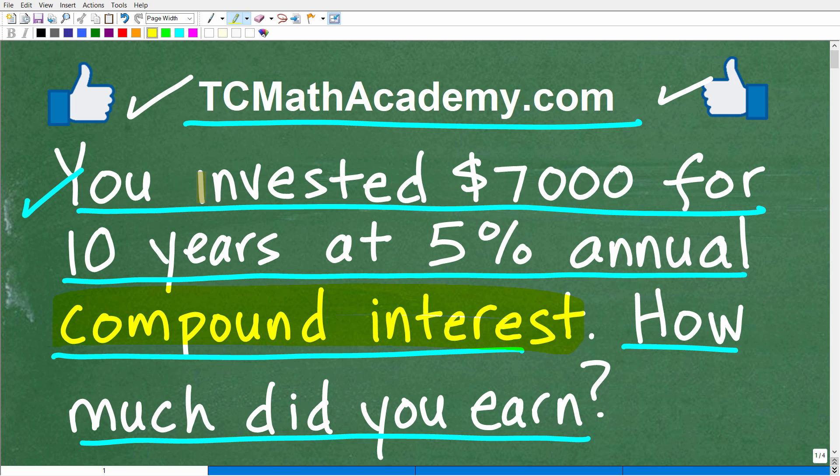All right. So just one more time. You go to your local bank or financial institution and say, hey, I have $7,000. You already made that money from your job or maybe someone gave this to you as a gift. But you have the $7,000 and you want to invest it for 10 years at a rate of 5% annual compound interest. So the question is what? How much money did we earn on our investment? You've got to be very careful here in terms of what the question is asking. Let's go ahead and take a look at the answer.